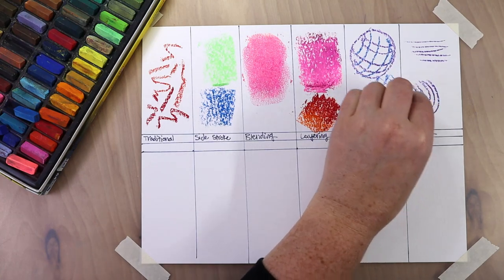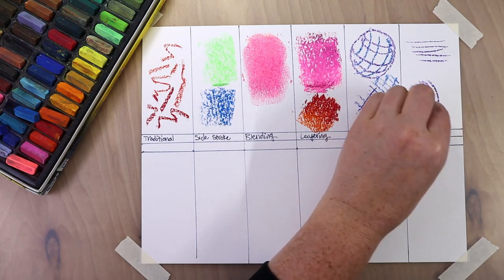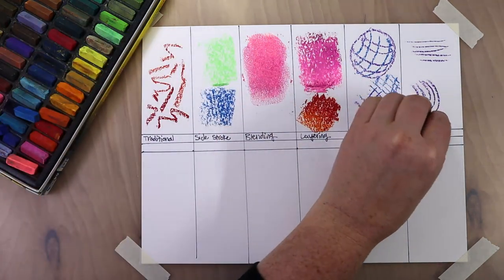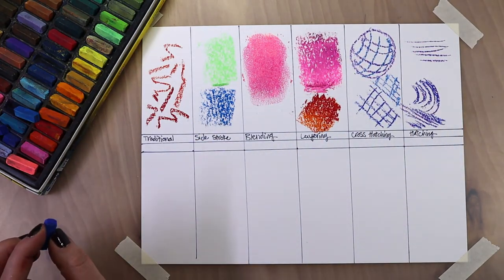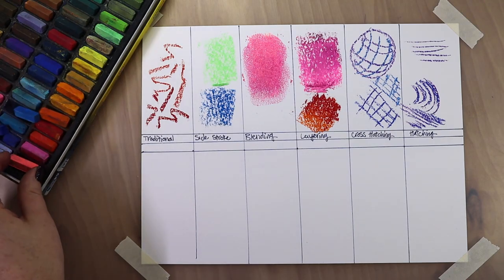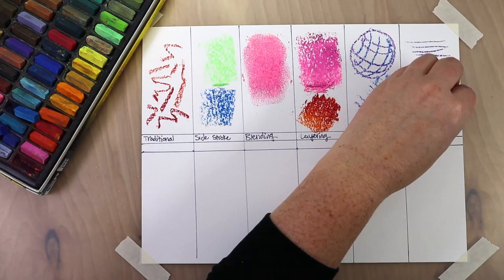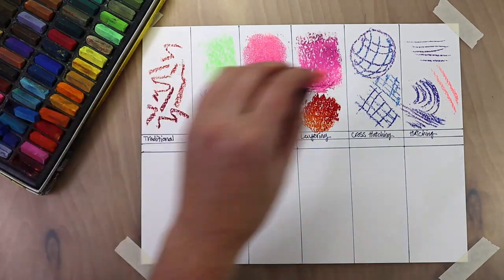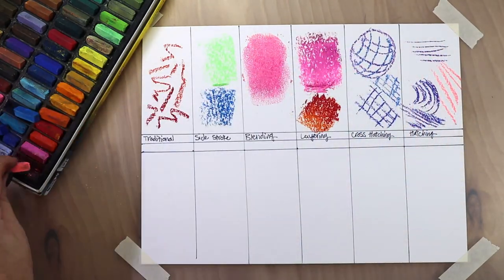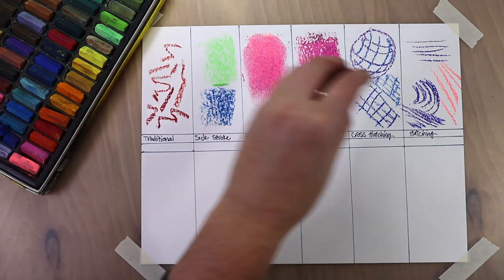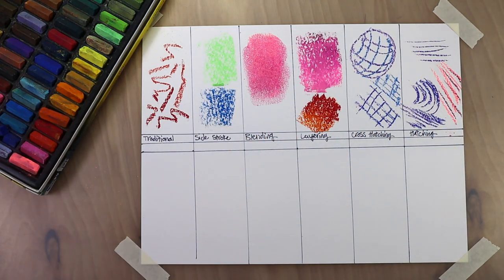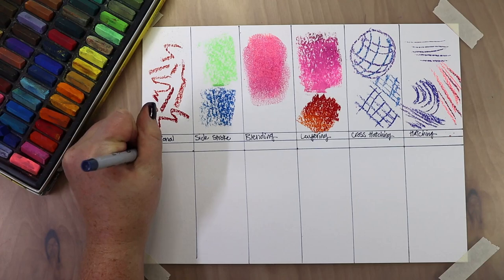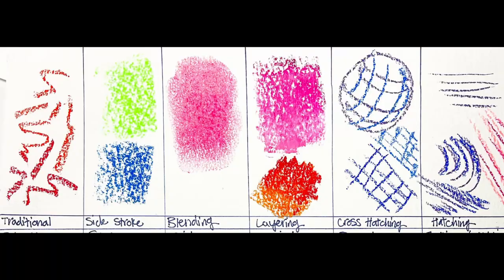The other thing that goes along with cross hatching is just hatching. Hatching is where all your strokes go the same direction, kind of parallel with each other. You can do curved lines or straight lines but they don't cross over each other — if they start crossing, it becomes cross hatching. This is a great way to create texture and depending on what direction you draw your lines, it can give your object shape.